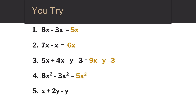In the fourth problem, 8x squared minus 3x squared are both like terms. 8 minus 3 is 5, so our answer is 5x squared.